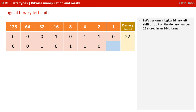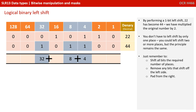We end up with an empty slot on the far right, which we simply pad with a zero. So if we left shift the number 22 one place, what we get back is 32 plus 8, which is 40, plus 4, which is 44. So 22 has become 44. In effect, we've multiplied the number by 2.